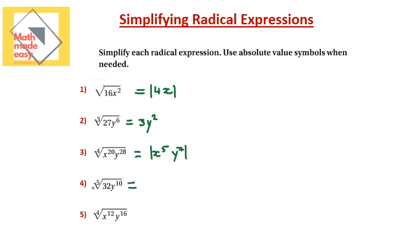Next: I need the fifth root — odd index, so no absolute value. The fifth root of 32 is 2, and the fifth root of y to the power of 10 is y squared. Final answer: 2y squared.